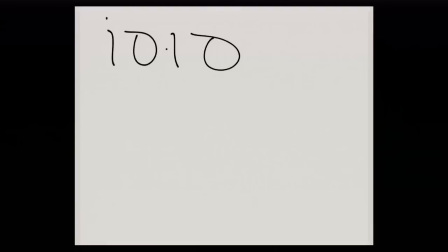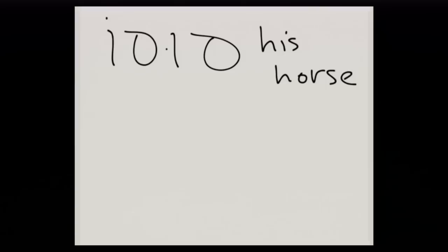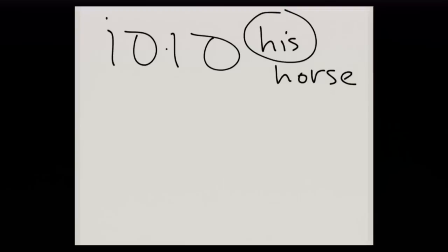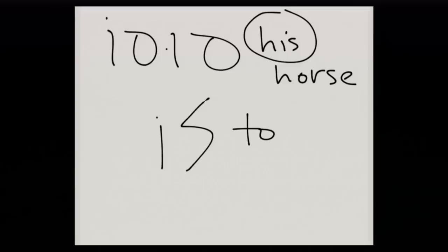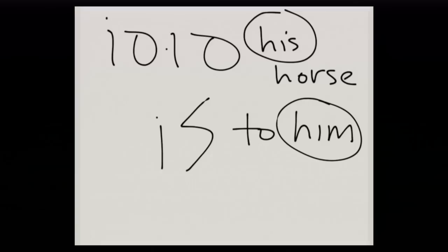Let's review those together. We'll begin by taking the noun sus, meaning horse, and adding the 3MS pronominal suffix to it. We're going to translate this construction as 'his horse.' The translation 'his' is the possessive translation value of the pronominal suffix, third masculine singular, -o. If we take that exact same pronominal suffix and add it to a preposition, lo, this is translated as 'to him.' The translation 'him' is the objective value of the 3MS pronominal suffix.